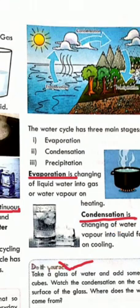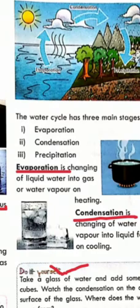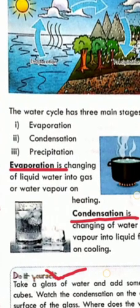The second stage is condensation. Condensation is the changing of water vapor back into liquid form. When the water vapor cools down, it converts into liquid — this is called condensation.